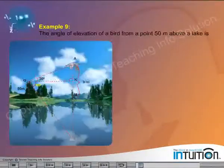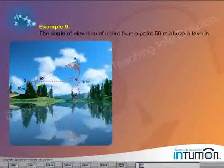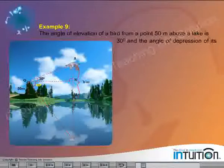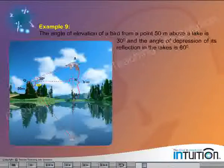Example 9: The angle of elevation of a bird from a point 50 meters above a lake is 30 degrees, and the angle of depression of its reflection in the lake is 60 degrees. Find the height of the bird.